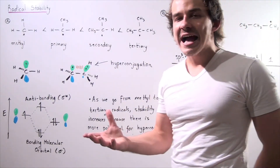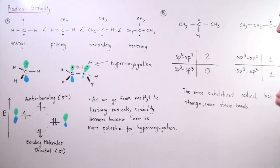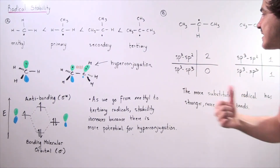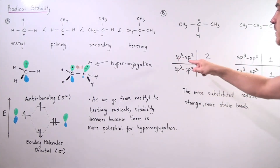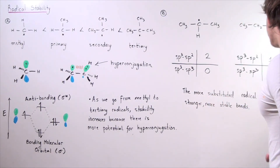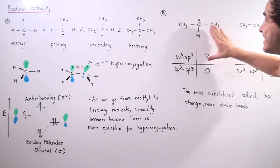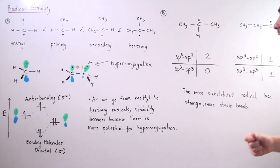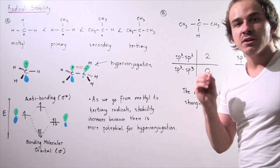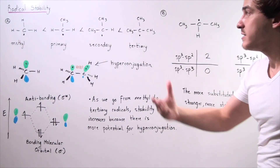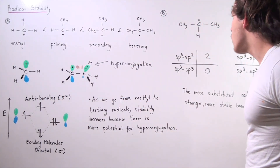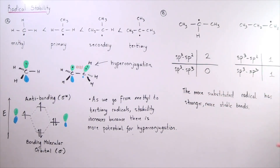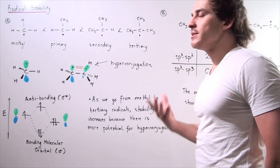The more s-character we have in a bond, the more stable it is. That's why sp3-sp2 hybridized bonds are more stable than sp3-sp3: sp3 contains 25% s-character while sp2 contains approximately 33.3%. So the secondary radical is more stable not only because of hyperconjugation, but also because its carbon-carbon bonds are intrinsically more stable. To conclude, the more substituted radical has stronger, more stable bonds, and there's more potential for hyperconjugation to take place — two effects that explain the stability trend.